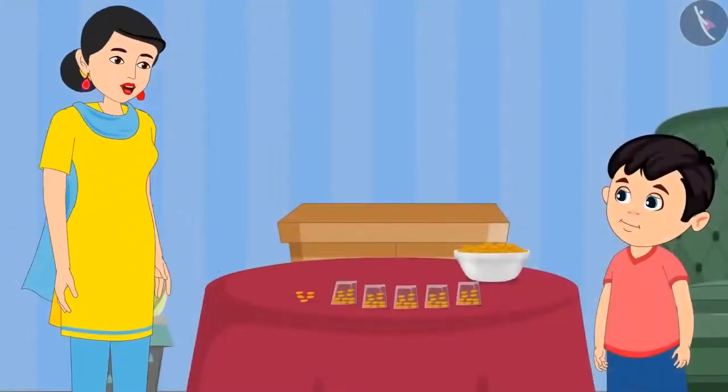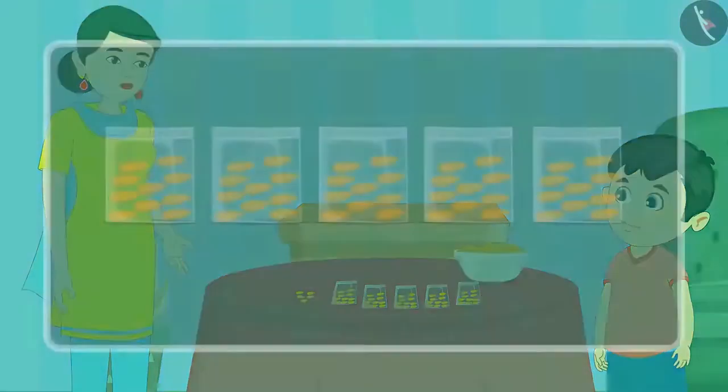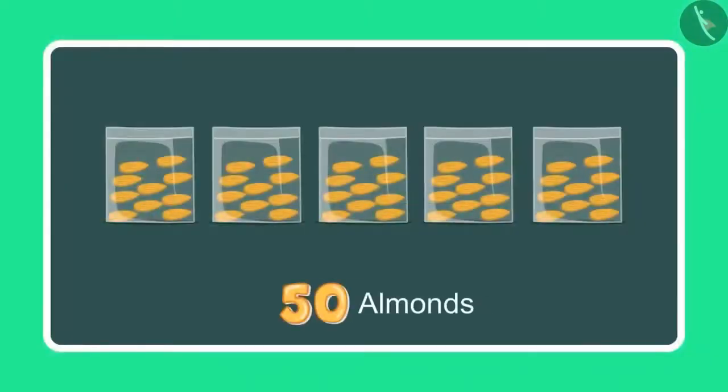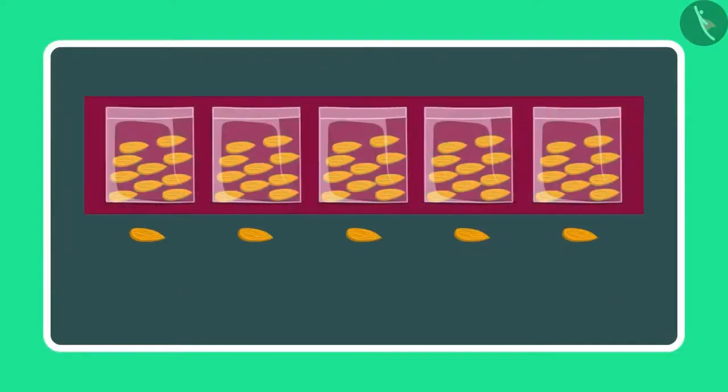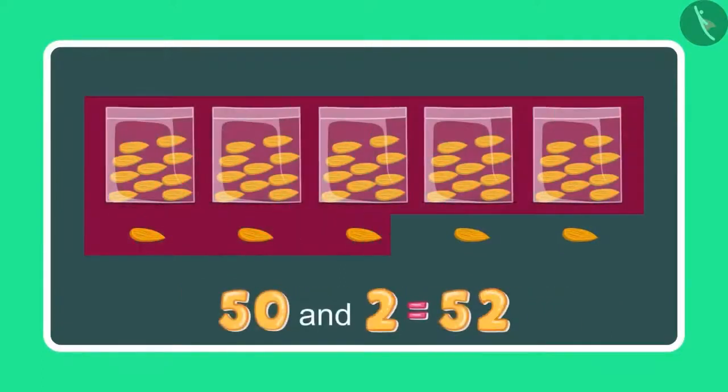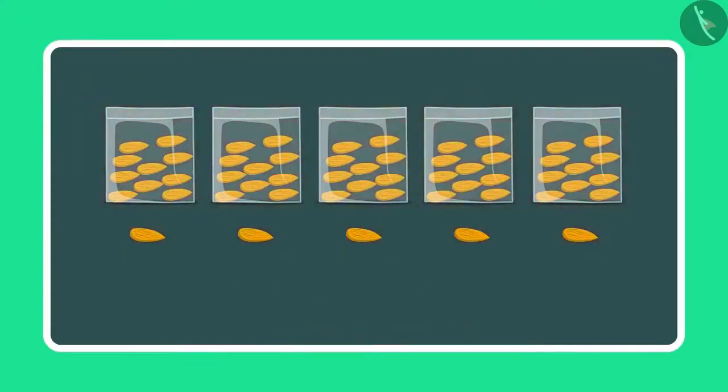Okay now Chotu, take 5 more almonds. Count these as well. So earlier I had 50 almonds and 5 more almonds. So it will make 51, 52, 53, 54 and 55. It means 55 almonds.